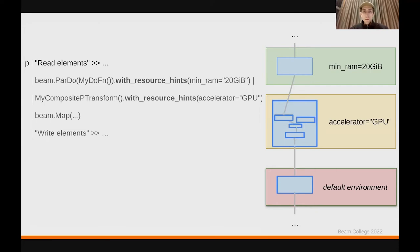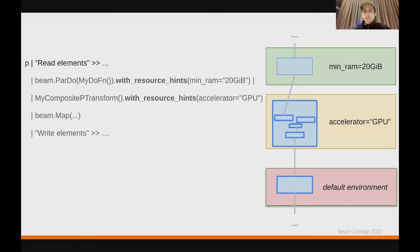We're talking about capabilities to express this kind of resource requirements — or as we call them, resource hints — in the SDK. I should say hints rather than requirements, and we'll go into detail about what that means. The way it changes the portable representation of your pipeline is that your transforms will now have different environments assigned to them. You would still have a default environment for transforms without resource hints, one environment with a hint that it should have at least 20 gigabytes of RAM, and another environment that says it has an accelerator.